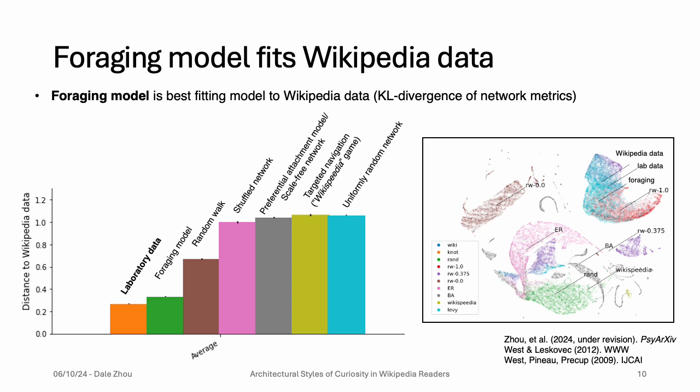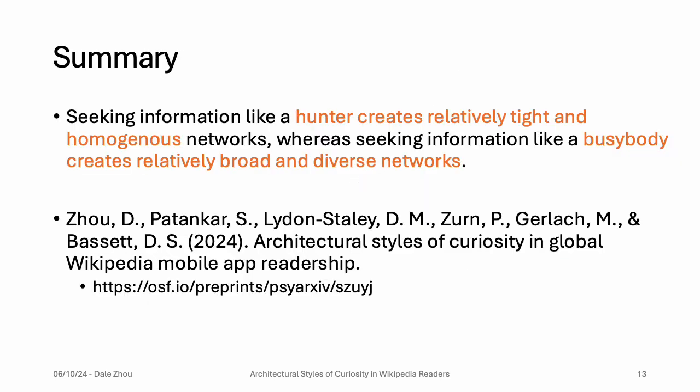We can also get the same view in a low-dimensional embedding of the data by embedding the network structure data into two dimensions. The lab data is closest to the mobile app data, and this also reveals the interesting possibility of identifying additional styles of curiosity beyond the hunter and the busybody, as curiosity is a multidimensional process. To summarize, we found that we can identify styles where people seek information like a hunter and create relatively tight networks, and others seek information more like a busybody and create relatively broad and loose networks. In the full paper, we explore how topics differ across these two types and how different forms of well-being and other sociodemographic variables differ across countries and languages. Thanks so much for your attention.